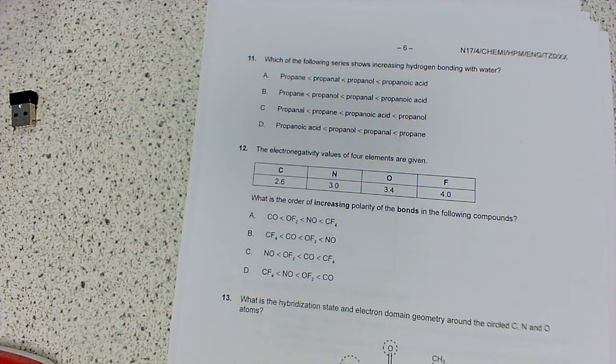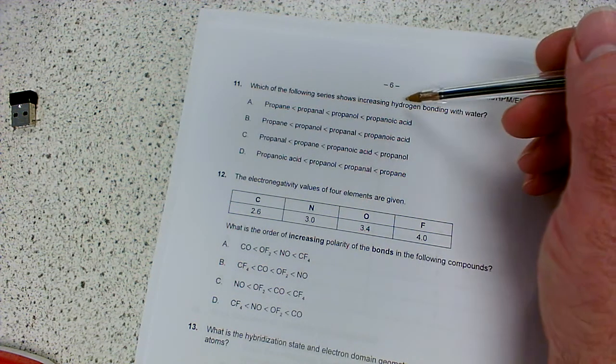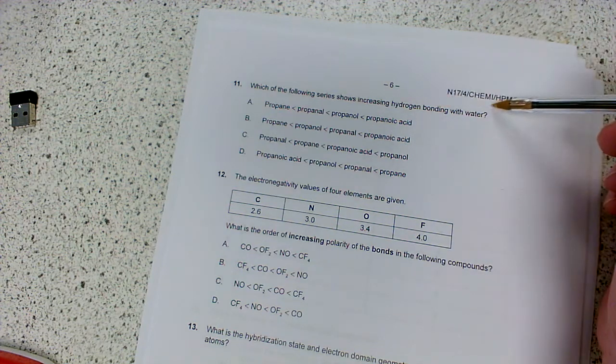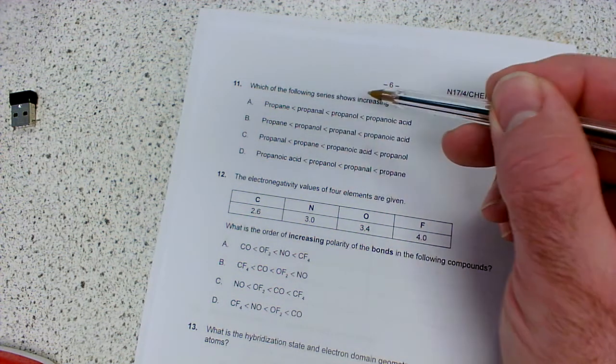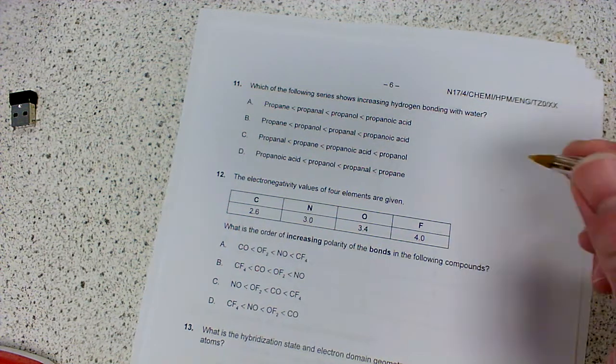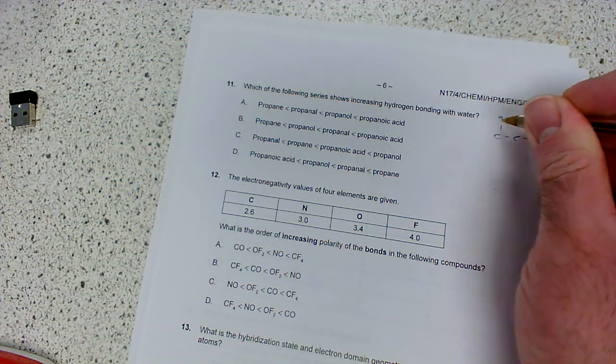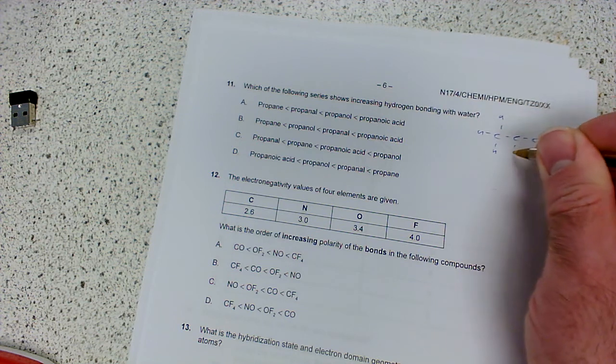Okay folks, on with the next bit. This is questions 11 to 20 of paper one from November 2017. Onto the bonding question. Question 11: which of the following series shows increasing hydrogen bonding with water? We've got propane, propanol, and propanoic acid. If you consider the structures, propane is three carbons with hydrogens attached.